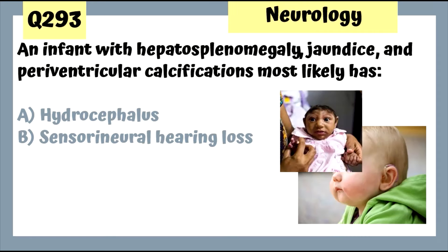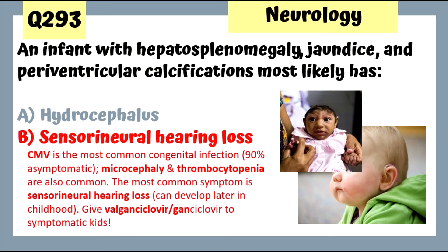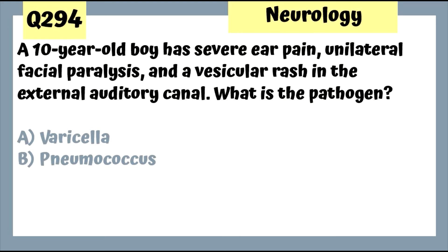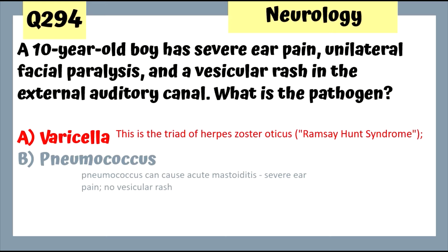Question 293: An infant with hepatosplenomegaly, jaundice, and periventricular calcifications most likely has CMV, associated with sensorineural hearing loss, which is the most common symptom in CMV in kids. Question 294: A 10-year-old boy with severe ear pain, unilateral facial paralysis, and a vesicular rash in the external auditory canal has herpes zoster oticus — the triad of Ramsay Hunt syndrome — caused by varicella zoster.